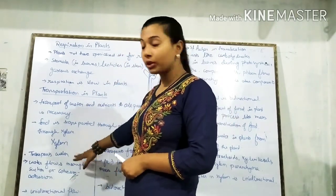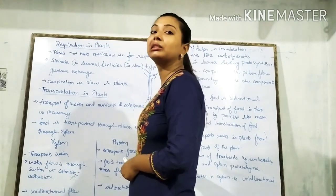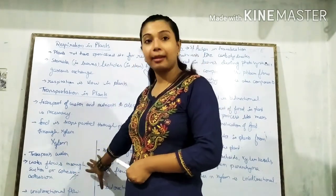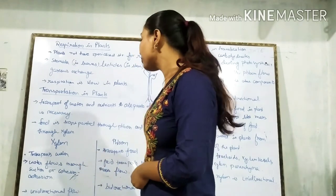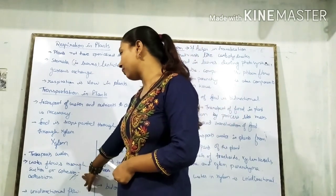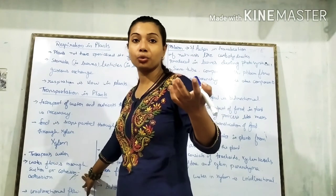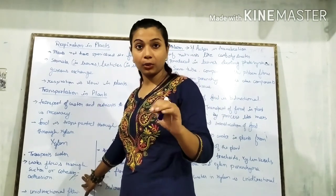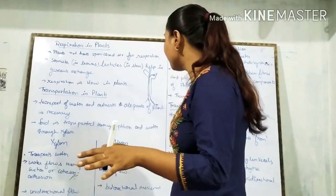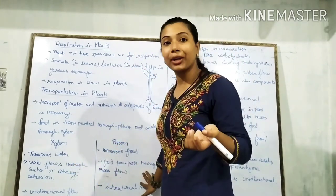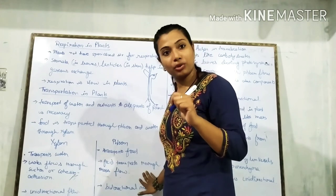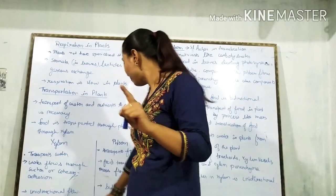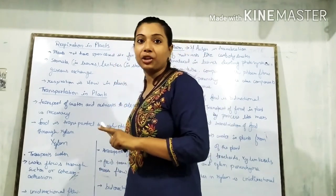So to summarise: xylem is for water transport and phloem is for food transport. You can also add the four components of each as part of the difference. The flow in xylem is unidirectional, and the flow in phloem is bidirectional.